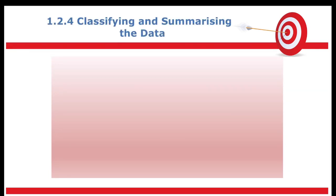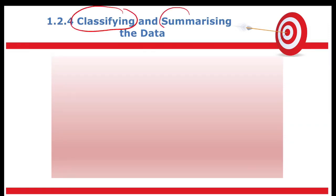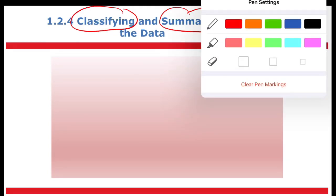1.2.4 — classifying and summarizing the data. After we have identified our problem, chosen a method of data collection, and chosen a sampling technique to collect our data, we now have data — a lot of data. So what do we do with it? We must classify and summarize our data, because all the data we collect is raw data.